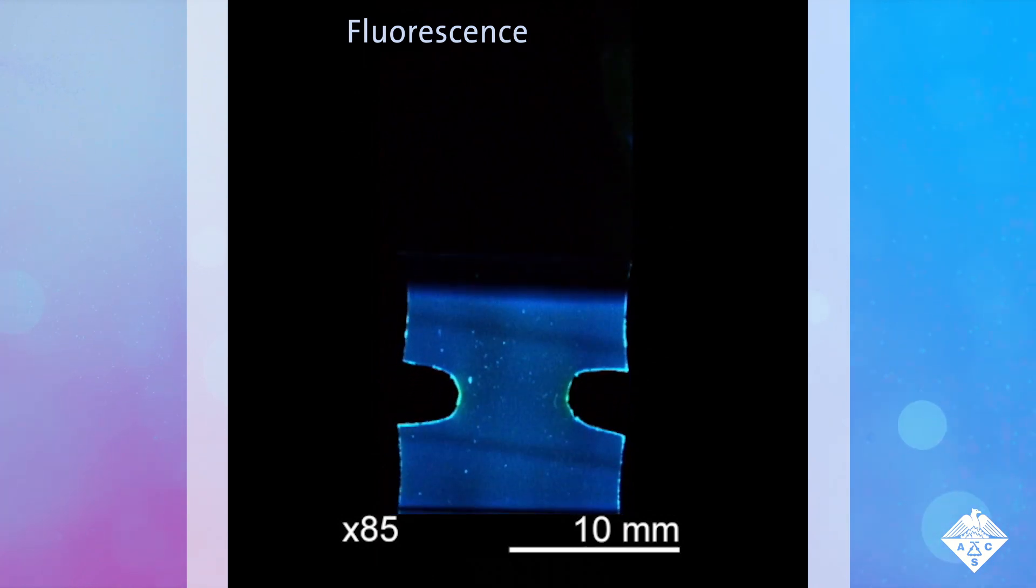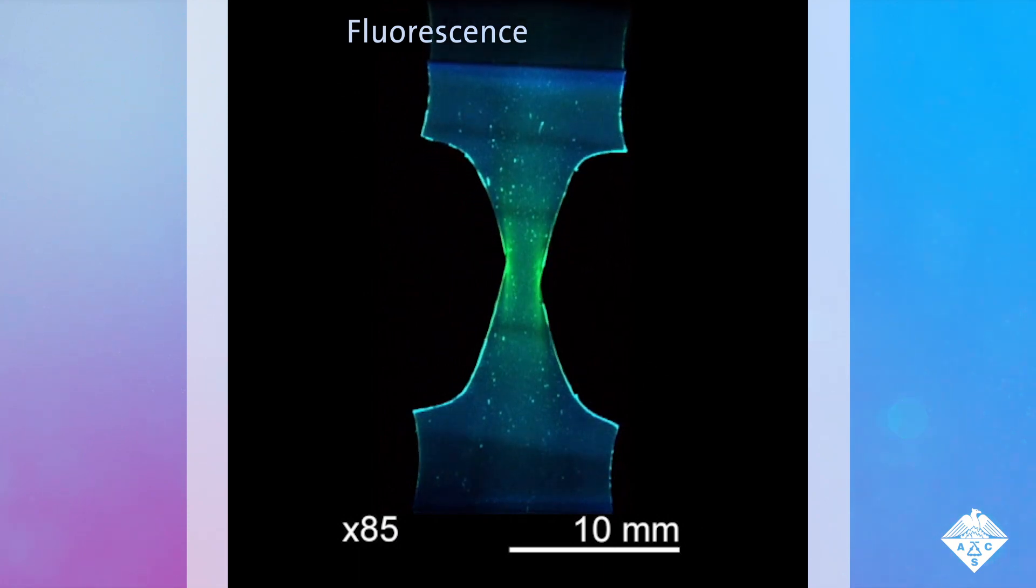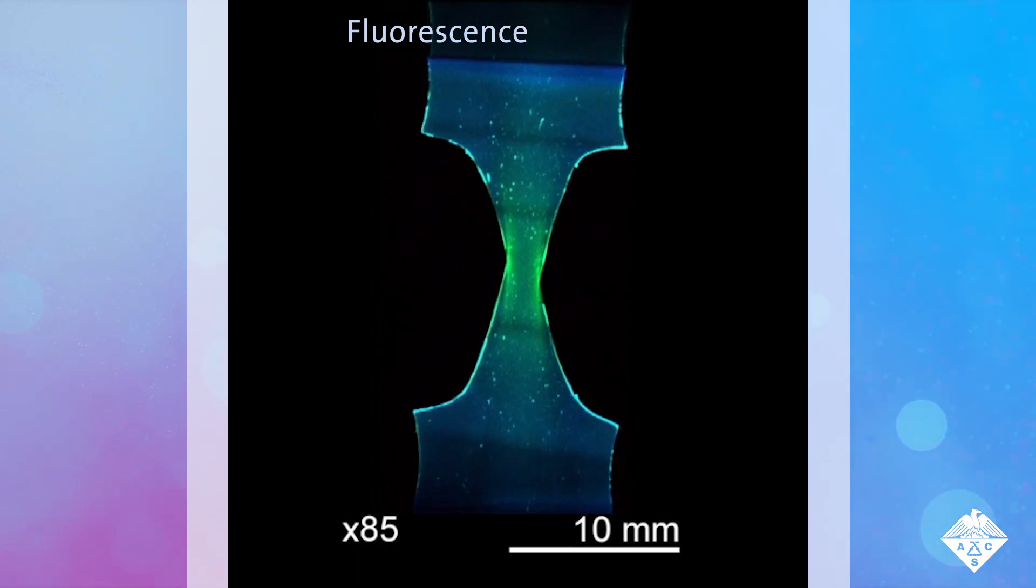To detect stress in these materials before it's too late, researchers reporting in the Journal of the American Chemical Society have designed a compound that changes the films and gels color when they're stretched or crushed.